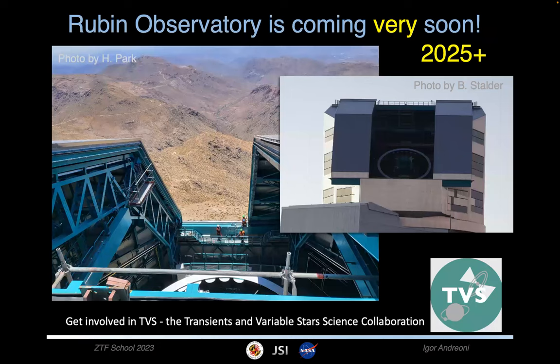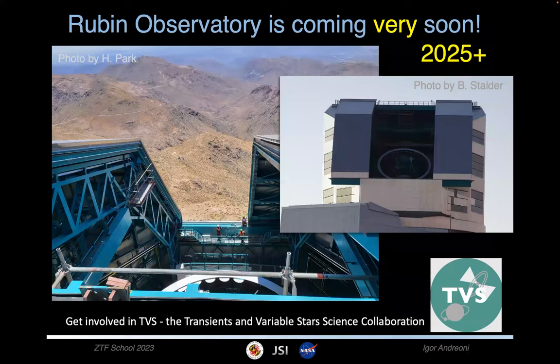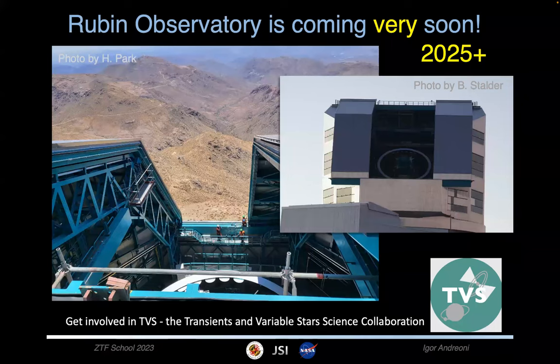Rubin is going to start soon — the dome is basically complete and the survey should start in early 2025, probably by the end of a PhD for many of you. I'm also wearing the hat of TVS — Transient and Variable Stars Science Collaboration — co-chair. There are several collaborations within the broader Rubin collaboration, and one specifically for transients and variable stars. If you want to get involved, come talk to me. The bar is pretty low — just make sure your institution has data rights. If you're in the US or Chile, you're fine. There are already more than 500 people involved.